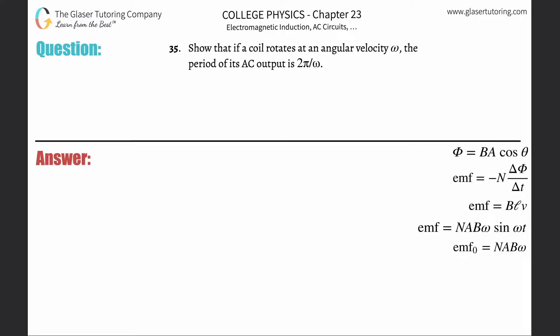Number 35: Show that if a coil rotates at an angular velocity of omega, the period of its AC output is going to be 2π over omega. So this is kind of a blast from the past a little bit.